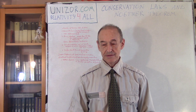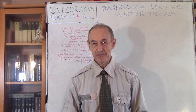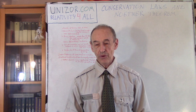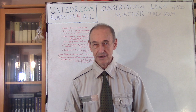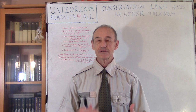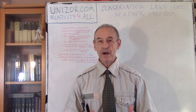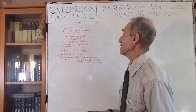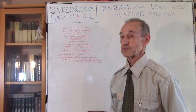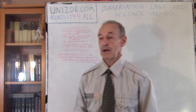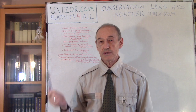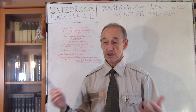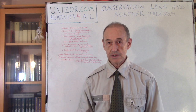This lecture is more or less within the same kind of vein. I will not try to prove anything; I'll just explain how certain concepts might be based on something earlier in physics. This lecture is part of the course called Relativity for All, presented on Unisor.com, together with two other courses — Maths for Teens and Physics for Teens — which contain material absolutely necessary to understand this one.